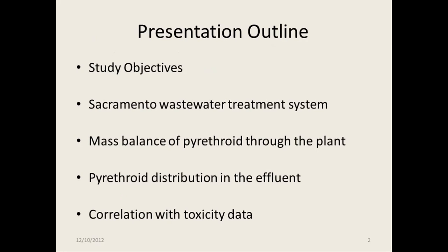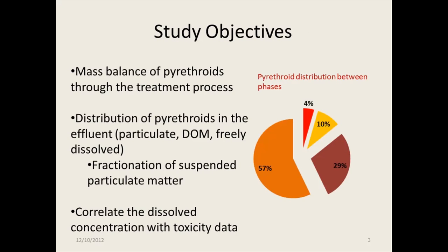I'm going to give you a brief overview of their system and then a look at how the pyrethroids distribute throughout the plant and how they are distributed in the final effluent. Finally, we're going to look and see if there was a correlation with the toxicity data that was gathered. Our main objective was first to get a mass balance of the pyrethroids to the treatment plant. We also wanted to look at the distribution in the effluent — whether they were associated with the particulate phase, dissolved organic matter, or the freely dissolved fraction.